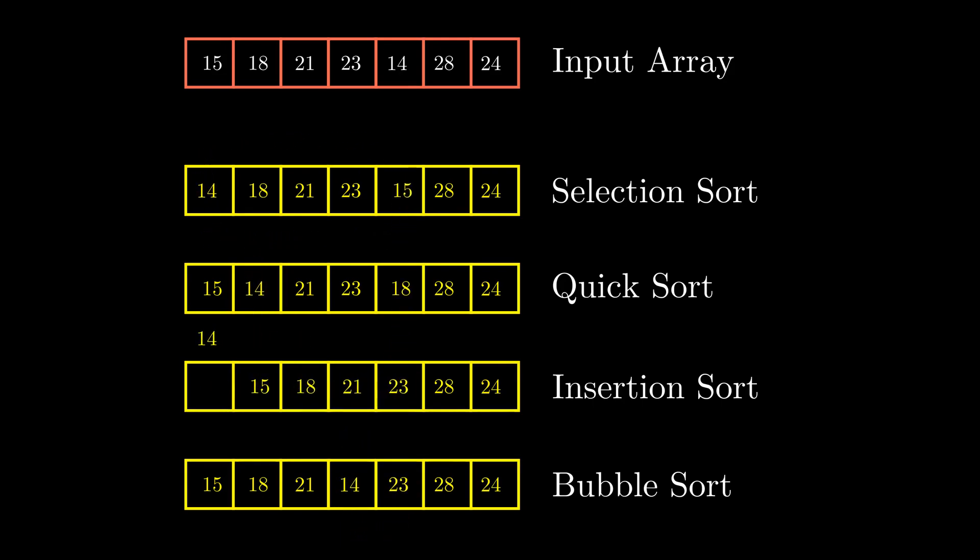These algorithms make different choices about how to interchange the numbers in the list to arrive at the sorted list of numbers. You can see the animation of a few algorithms here. They have different time and space complexities, but they all get the job done.